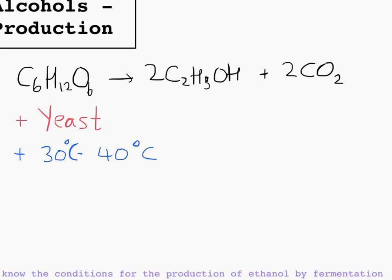If it's too high, the enzymes in the yeast denature. We need atmospheric pressure, although that's assumed if you don't write it. But you also need an absence of oxygen. The reason we don't want any oxygen in the system is that if oxygen is in there, then ethanoic acid is produced rather than ethanol.